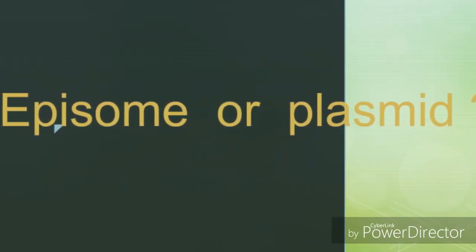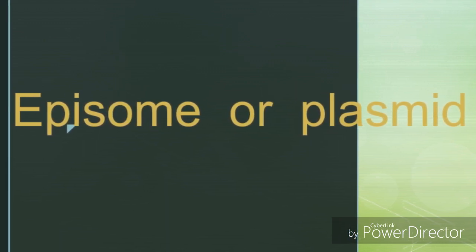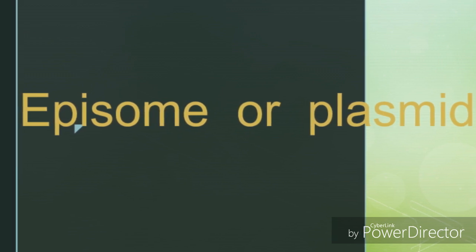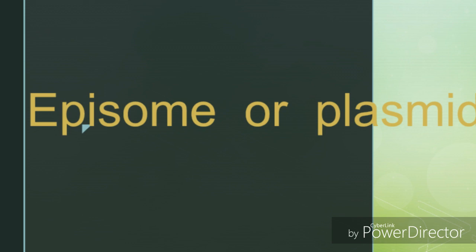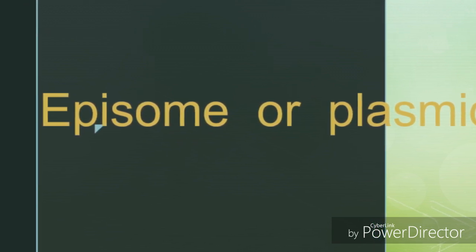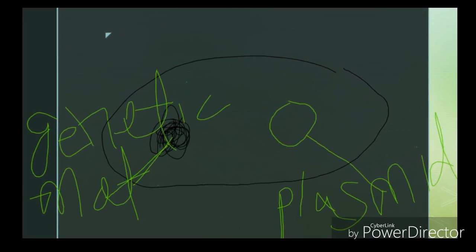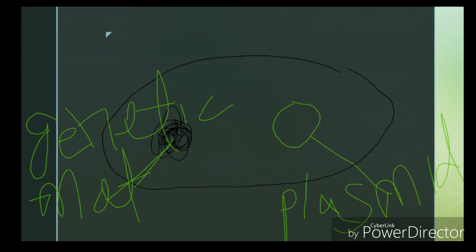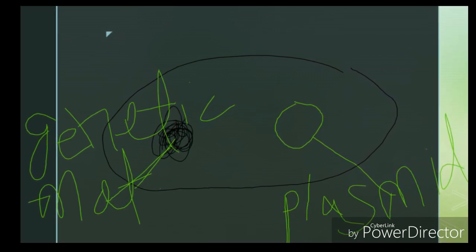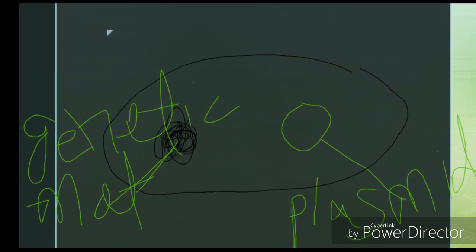Today we will talk about episome. Before we talk about episome, in bacteria, it is a genetic material. It is a circular part that is called a plasmid. If by chance the plasmid integrates into the main genetic material, then we call it an episome.